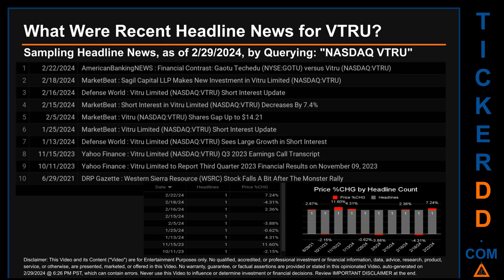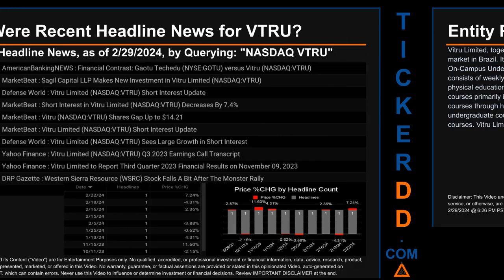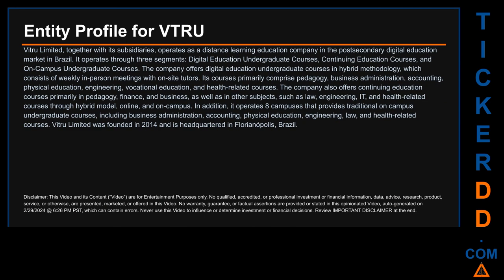The oldest publication was on Tuesday, June 29, 2021, when two years and eight months ago, DRP Gazette published a headline. Thursday, February 15, 2024, was the day with the highest percentage change in price when comparing opening versus closing price for the ticker. The day saw a jump of 11.60%. There was one found headline when MarketBeat published the headline that read: 'Short Interest in Vitru Limited Decreases by 7.4%.'